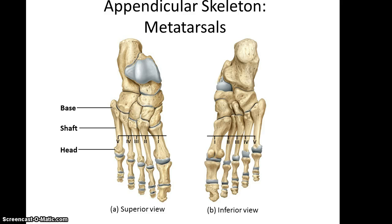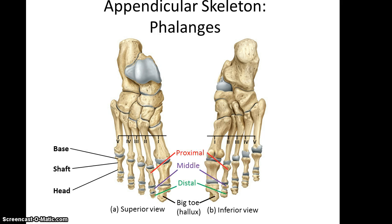The metatarsals are the equivalent of the metacarpals — all long bones, numbered one through five starting with the big toe, each having a base, a shaft, and a head. Then the phalanges correspond to the phalanges of the hands, again with proximal, middle, and distal phalanges — except for the big toe, which only has a proximal and distal phalange with no middle phalange. They are numbered one through five starting at the big toe. And that's it for the lower appendicular skeleton.